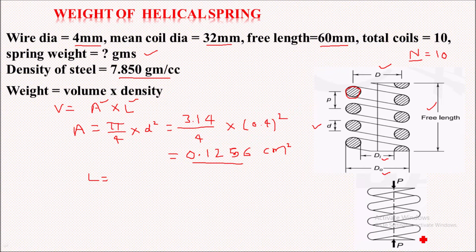A coil is basically spirally wound, as you can see here.